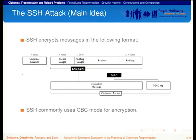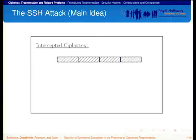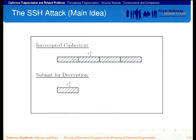SSH commonly uses CBC mode for encryption, and when this is done, the following attack works. The adversary can intercept a ciphertext and, wanting to recover partial plaintext from a ciphertext block C_i*, takes advantage of the fact that in CBC mode ciphertext blocks can be easily swapped. He sends that ciphertext block as the first block for decryption. In decryption, SSH decrypts this block and interprets the first 32 bits of the resulting plaintext as the length field.